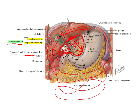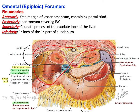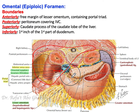Let us talk about the boundaries of the omental foramen — how can we get there. This is a cross-section at the level of the stomach. The liver has been removed. You can see the opening of the epiploic or omental foramen here. It is bounded anteriorly by this fold of peritoneum — the hepatoduodenal ligament.